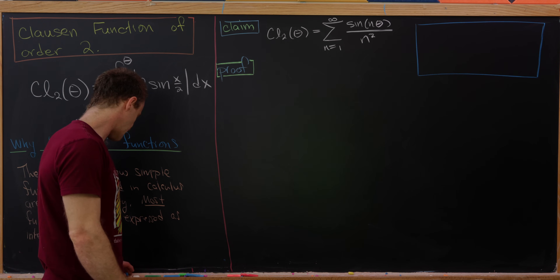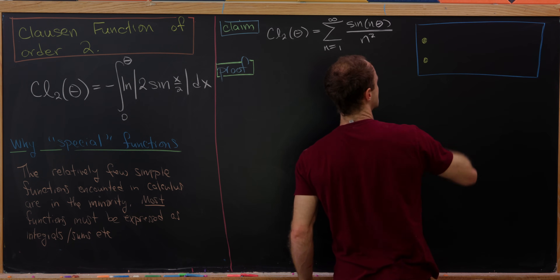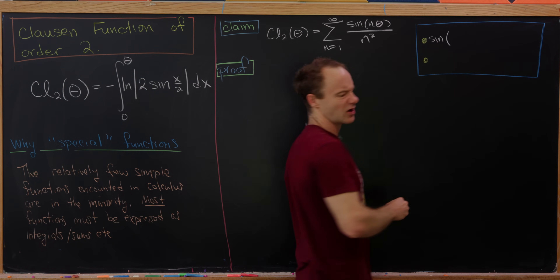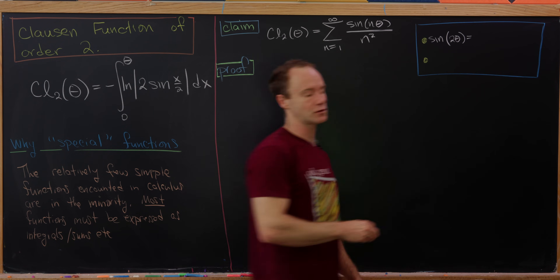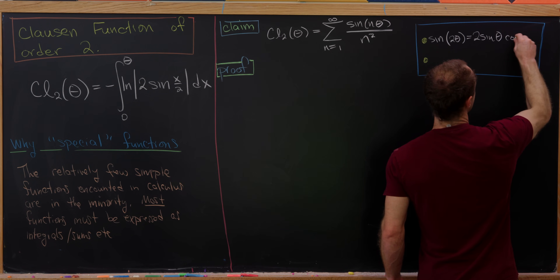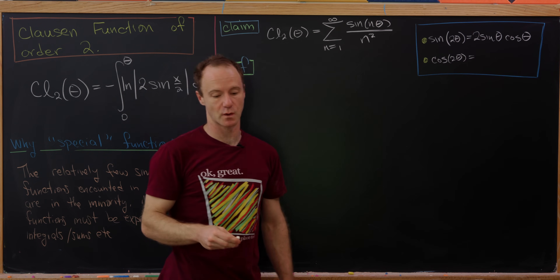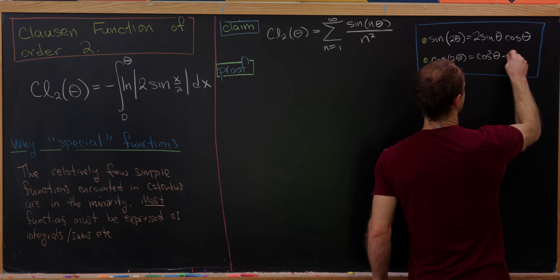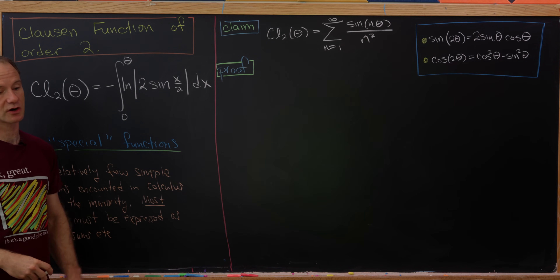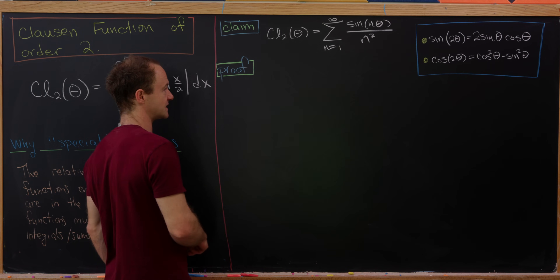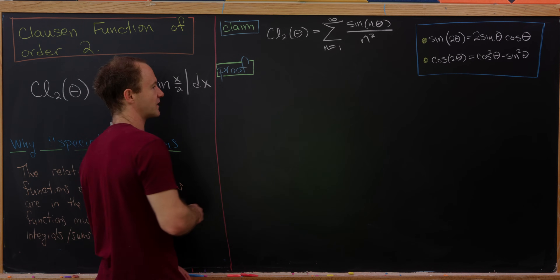I've put a box up there to recall a certain trigonometric identity: the double angle formulas. Sine of 2θ equals 2 sine θ cos θ, and cos 2θ equals cos²θ minus sin²θ. We'll also use Euler's formula for the complex exponential. Those are the main tools we'll need.